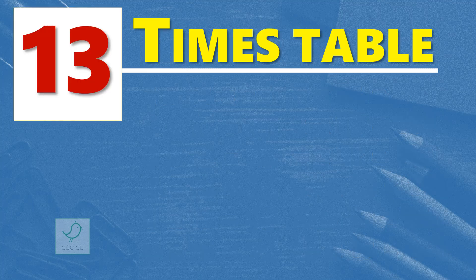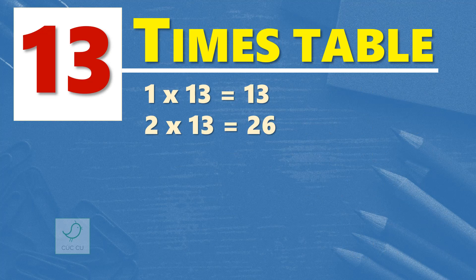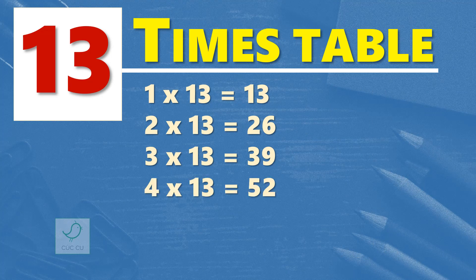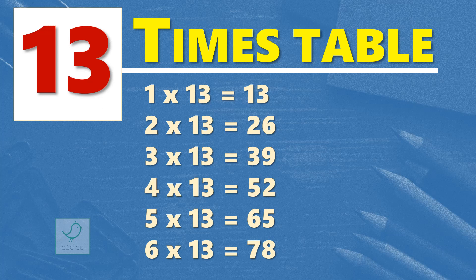13 times table. 1 times 13 is 13. 2 times 13 are 26. 3 times 13 are 39. 4 times 13 are 52. 5 times 13 are 65. 6 times 13 are 78.